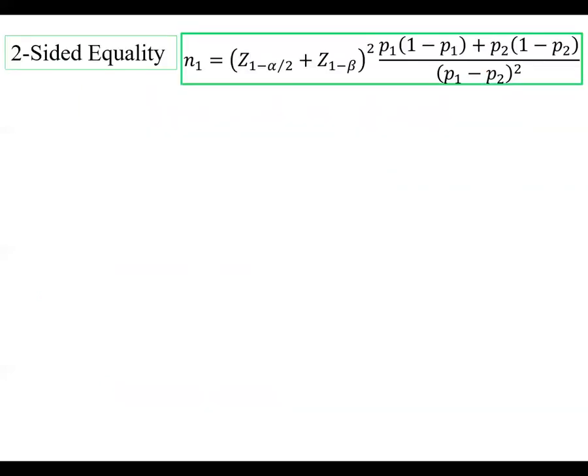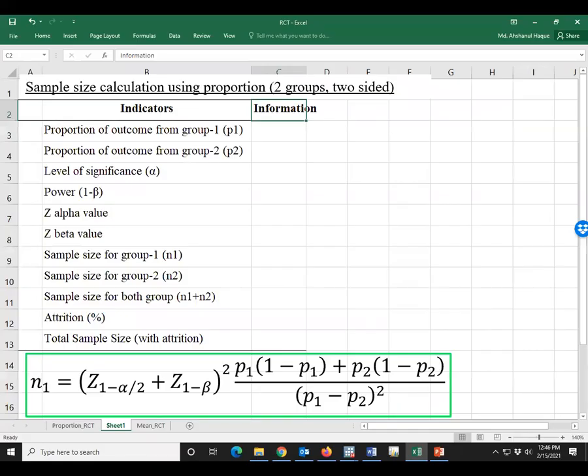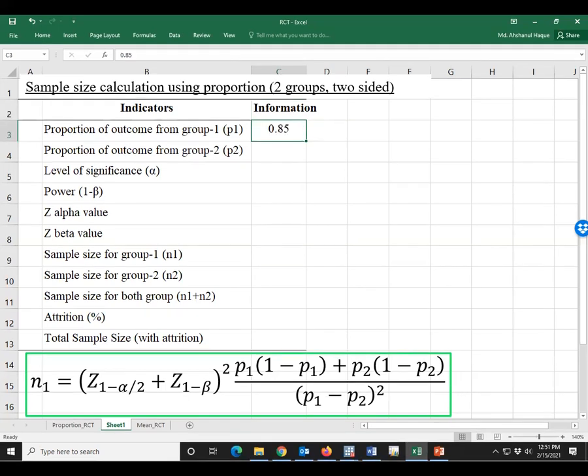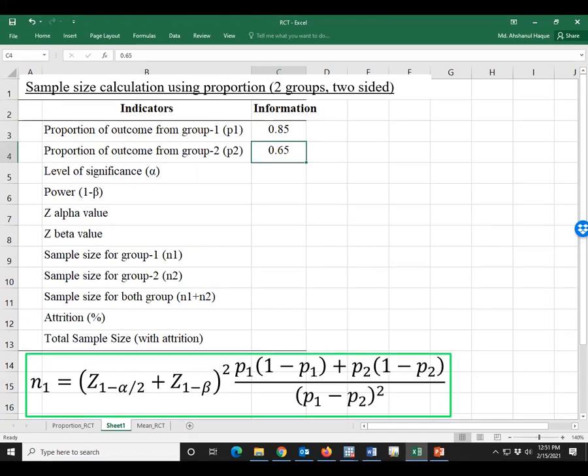Now we will describe sample size calculation procedure for two-sided test. This is an Excel sheet and we have to input the necessary information based on this formula. Proportion of group 1, proportion of group 2. The level of significance is 5 percent.